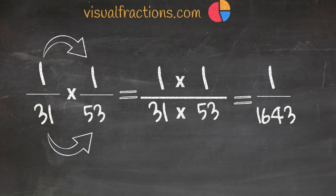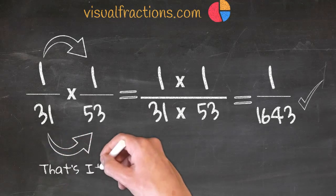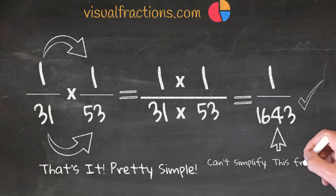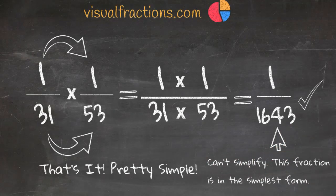Therefore, one thirty-first multiplied by one fifty-third equals one one-thousand six-hundred forty-third. That's our final answer. It's really that simple. Remember, the result is already in its simplest form.